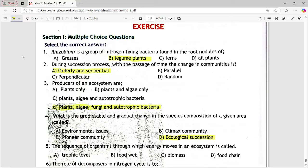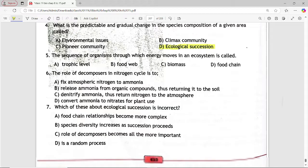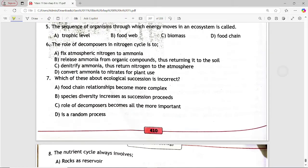Next is, the sequence of organisms through which energy moves in an ecosystem is called. Options are trophic level, food web, biomass, food chain. Answer is option b, food web.